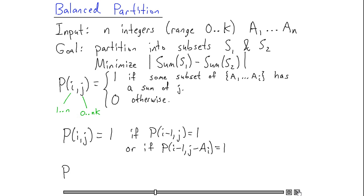And I can write this formula in a more compact fashion as follows. I can just say that p of ij is just the max of p of i minus 1 j and p of i minus 1 j minus ai.